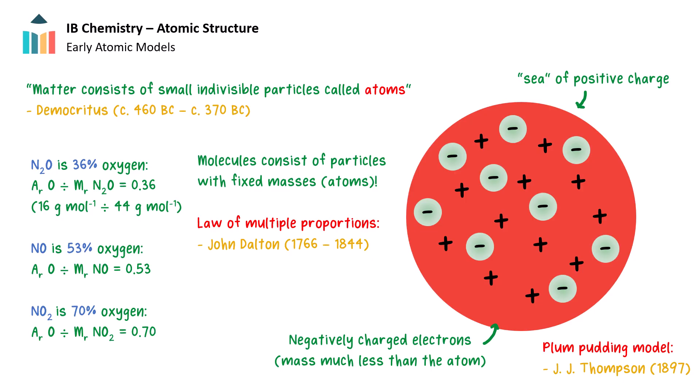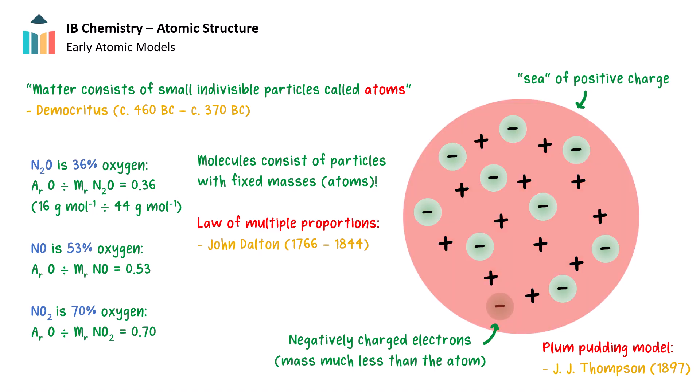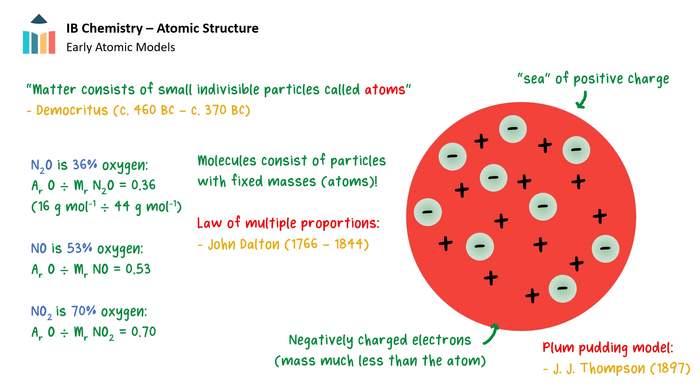But what do atoms look like? J.J. Thompson discovered in 1897 that atoms contain electrons, and showed that the mass of the electron is much less than the mass of the atom. He proposed the plum pudding model of the atom, in which negatively charged electrons are embedded in a sea of positive charge.